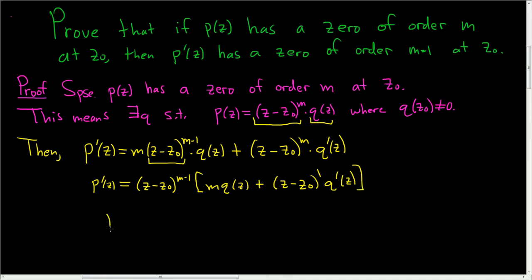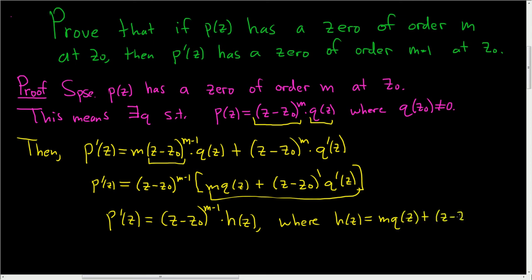So we have p prime of z is equal to z minus z naught to the m minus 1 times, let's call it h of z, where h of z is equal to this expression here. So m q of z plus z minus z naught q prime of z.